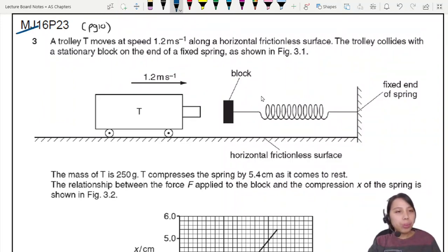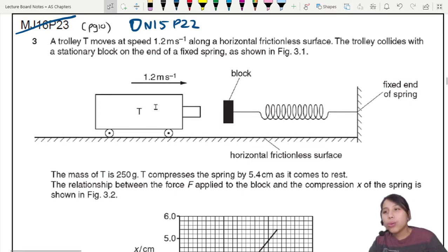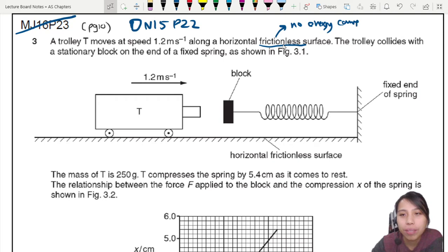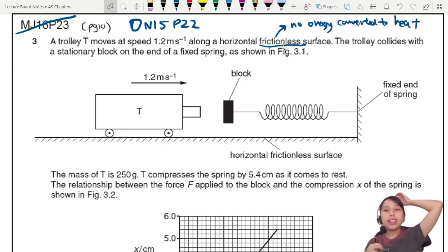Here's a spring question. There's an error - this should be ON 15 P2. We have a trolley T moving along a frictionless surface. Frictionless is very nice because that means there's no energy converted to heat. Normally in this setup, whenever you lose energy to heat we consider it lost because you're not going to get it back. This trolley will move and eventually collide with the spring and compress it.